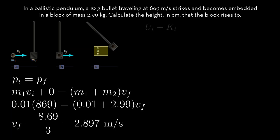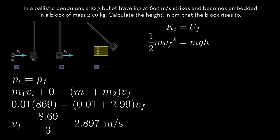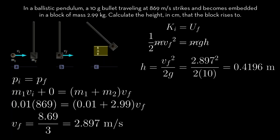According to conservation of mechanical energy, the total mechanical energy of the block at the bottom of its path, at point B, equals the total mechanical energy at the top of its path, at point C. This includes potential and kinetic energy. At the bottom of the path, the potential energy is zero since the height is zero, and at the top of the path, the kinetic energy is zero since the velocity is zero. So the kinetic energy at the bottom equals the potential energy at the top. We can replace kinetic energy with one-half mv squared and potential energy with mgh. Here m represents the total mass of the bullet and block, which is 3 kilograms, but it cancels out. Solving for h, we get that the height is vf squared over 2g, which is 0.4196 meters. The problem asks for the answer in centimeters, so converting gives us that the answer to this problem — as is the answer to life, the universe, and everything — is 42.